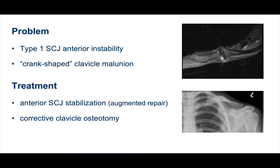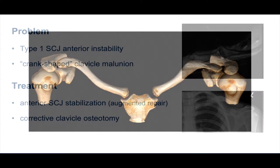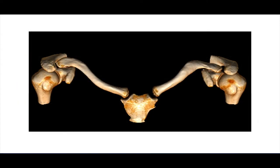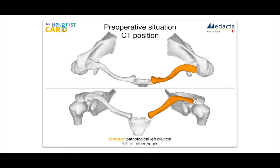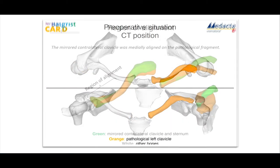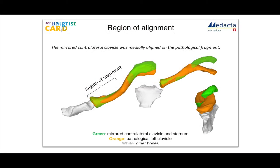To treat this would require a repair of his anterior capsule but also a corrective clavicle osteotomy. A comparative CT scan of both clavicles was used, from which the contralateral normal clavicle was superimposed on the malunion.